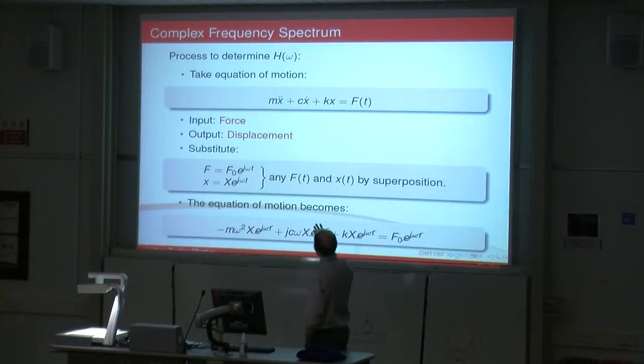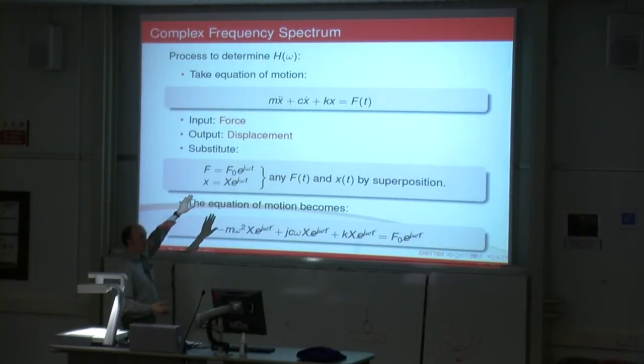How do we work out what H omega is? MX double dot plus CX dot plus KX equals F(t) for a damped system. The input into this equation is the force, the force input. The output is your displacement. If you've got displacement, you take the first derivative, you get velocity. Second derivative, you get acceleration. So if you know displacement, you can work out the other stuff. The input is force, output is displacement.